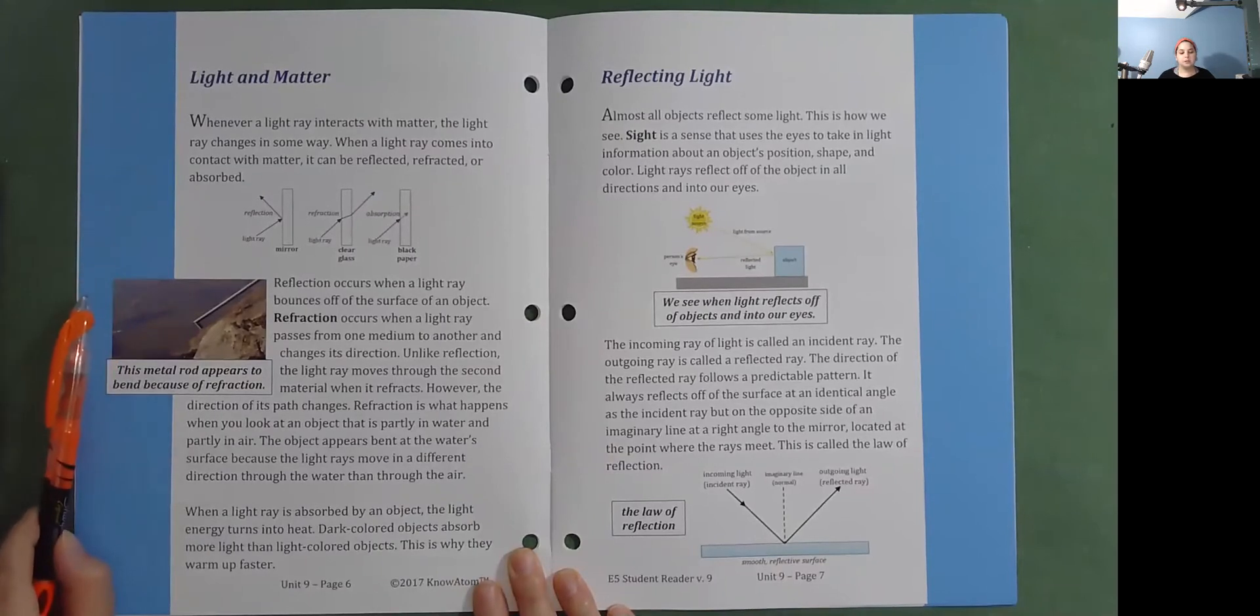Reflection occurs when a light ray bounces off of the surface of an object. Refraction occurs when a light ray passes from one medium to another and changes its direction. Unlike reflection, the light ray moves through the second material when it refracts.